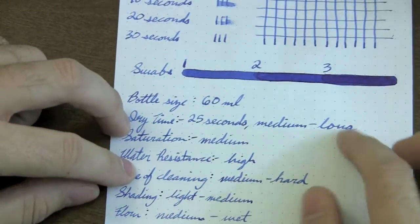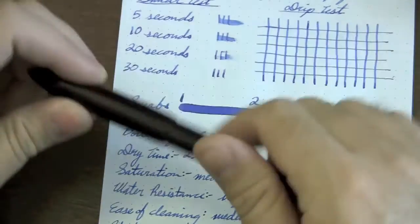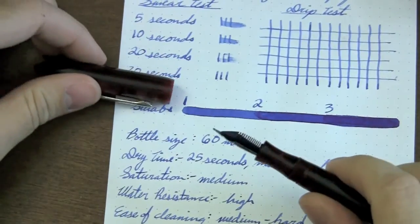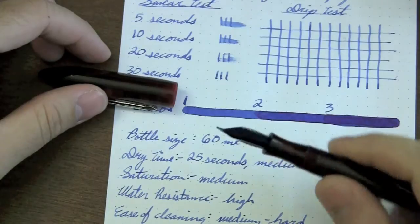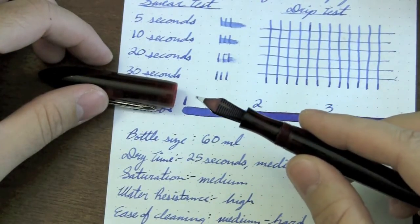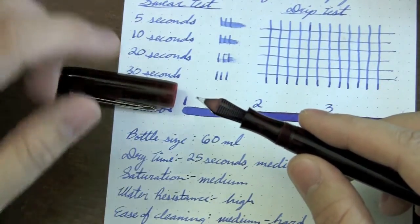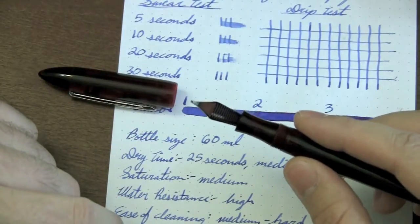That red sheen that it has tends to want to get on the feed of the pen. Let me see if I can show you. You probably can't see it well in the video here. No, you can't see it. There we go. You can see it a little bit there. See, it kind of leaves a little bit of that red sheen on the feed.